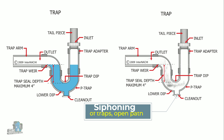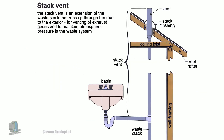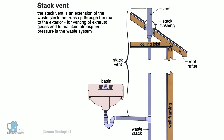Without these air vents, the water in these traps can be siphoned up. Second: vacuum. A vent will allow air into the system to prevent a possible vacuum from forming and preventing proper waste flow.